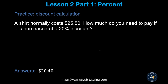Try this one yourself: a shirt normally costs $25.50 — how much do you need to pay if it is discounted at 20 percent? Convert the percent to a decimal, multiply by $25.50 to get the discount amount, then subtract from $25.50 to get the final price.